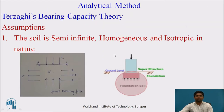Moving to the first analytical method, we look at Terzaghi's bearing capacity theory. Terzaghi has given several assumptions related to his theory. The first assumption is that the soil is semi-infinite, homogeneous, and isotropic in nature.